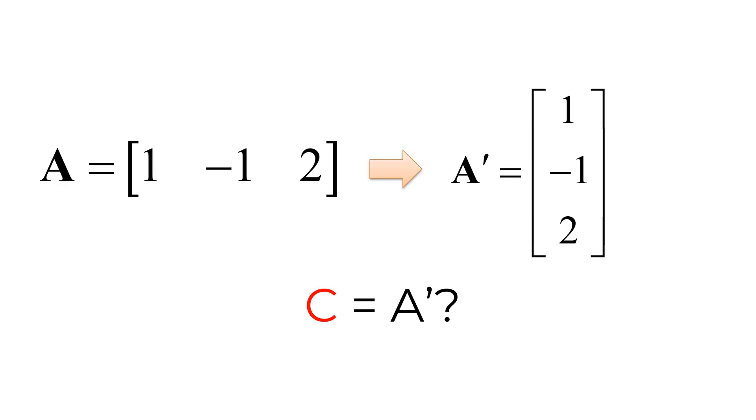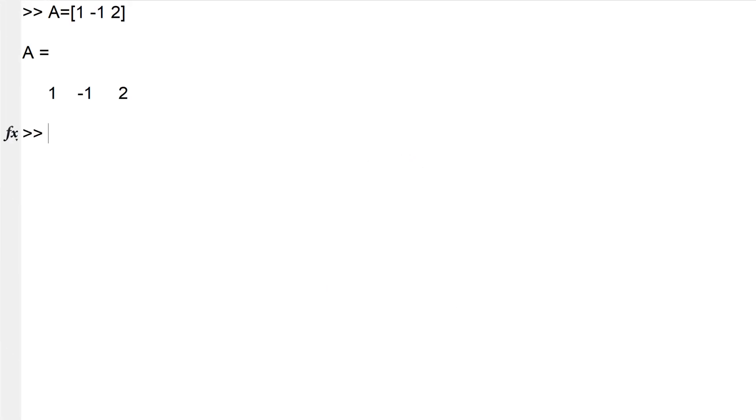Consider a row vector A. If you want to transpose vector A by swapping row and column indices, you can use a single quotation mark at the end. You can first create a vector A, then you can transpose it by using single quotation mark at the end. And you can see vertical column vector out of row vector.